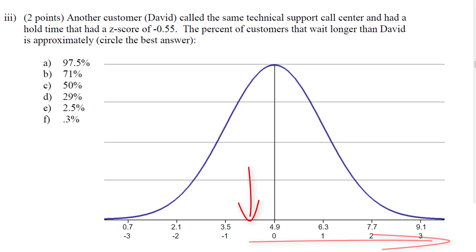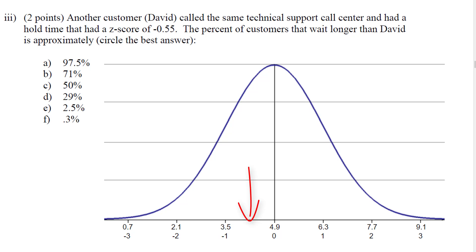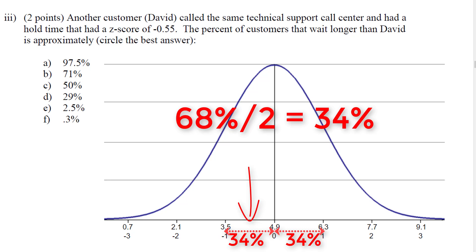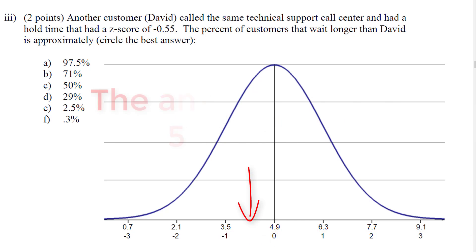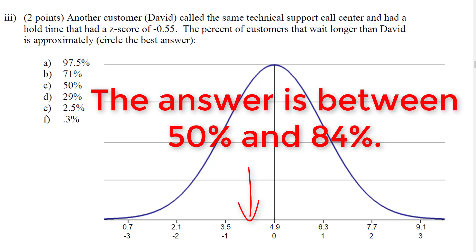We also consider negative 1. Using the 68 rule, we can figure out that 34% would be between negative 1 and 0, so above negative 1 is actually 84%. This is a great question because it makes you realize there's only one plausible answer — it has to be less than 84% and greater than 50%. So the answer is 71%.